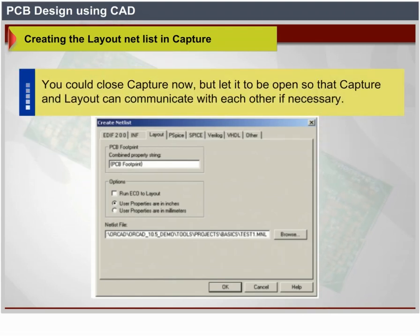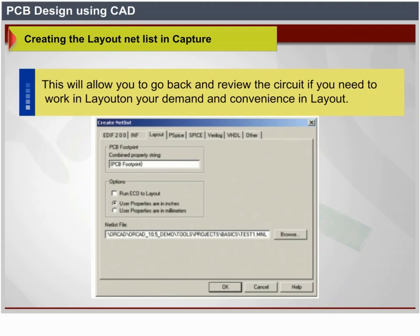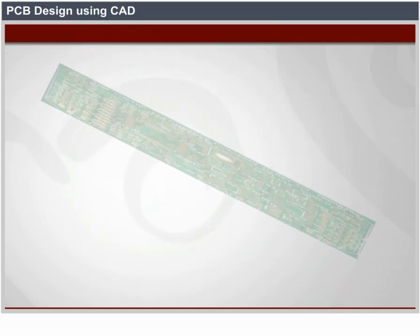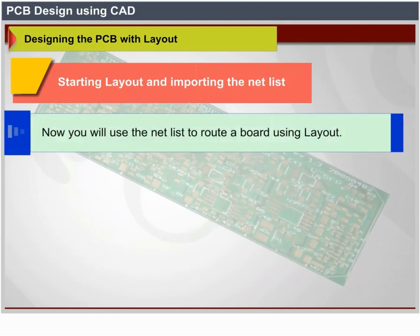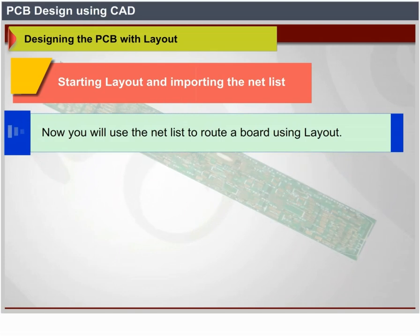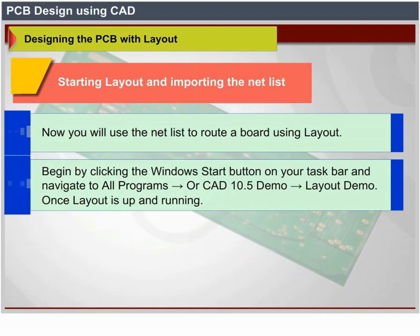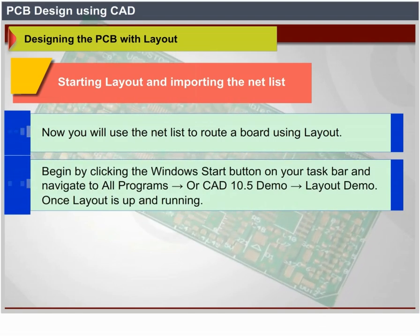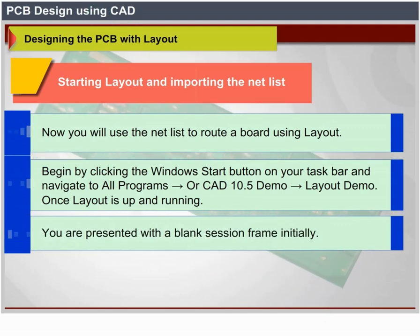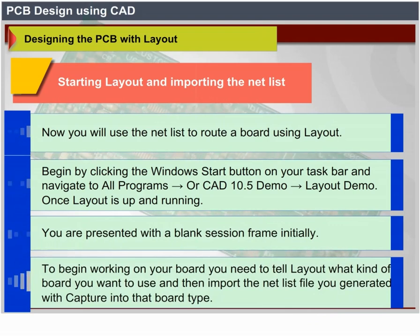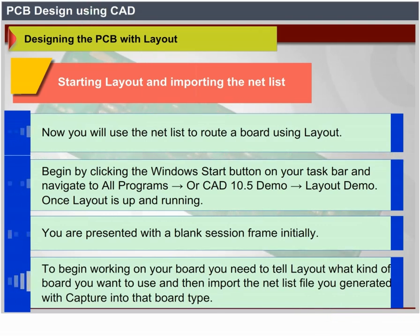You could close Capture now, but leave it open so that Capture and Layout can communicate with each other if necessary. This allows you to go back and review the circuit when working in Layout. PCB design using CAD — Designing the PCB with Layout: now you will use the netlist to route a board using Layout. Begin by clicking the Windows Start button and navigating to All Programs > OrCAD 10.5 Demo > Layout Demo. Once Layout is up and running, you will be presented with a blank session frame. To begin working on your board, you need to tell Layout what kind of board you want to use and then import the netlist file generated with Capture.